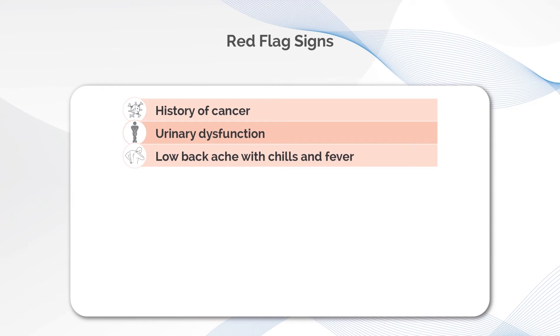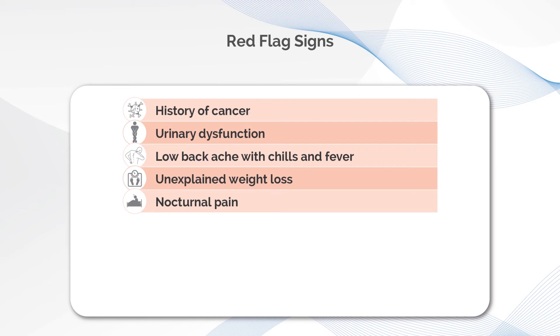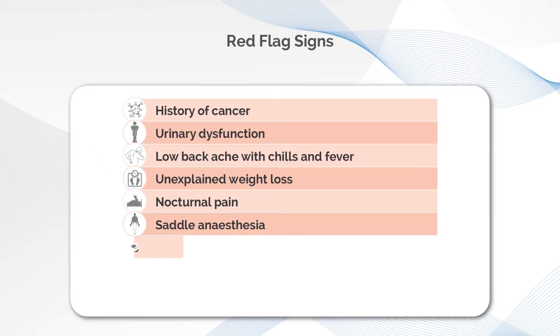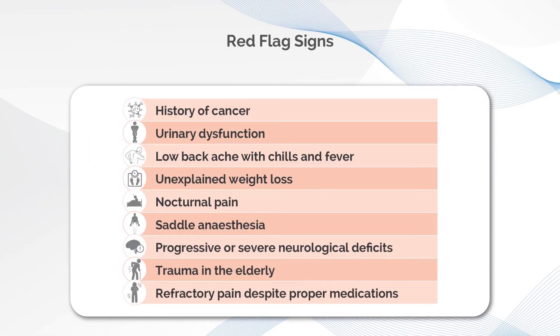Back pain with chills and fever is usually because of infection in the spine. Unexplained weight loss can also indicate a serious problem. If a person has pain shooting down the leg along with fever, weight loss, or urinary dysfunction, one must get an MRI scan — not just give medicines — to find out if anything is compressing the nerves. Nocturnal or rest pain can be a serious matter, as can saddle anesthesia — numbness around the buttock and groin region — due to nerve compression. A progressive neurological deficit such as weakness in the legs, or pain that doesn't settle with medications, are all red flag signs requiring further investigation.